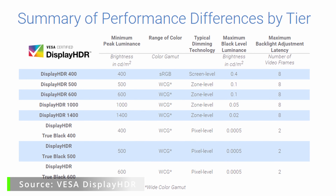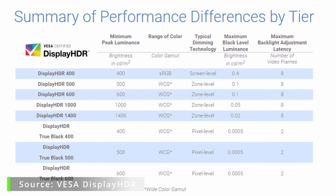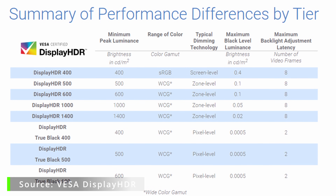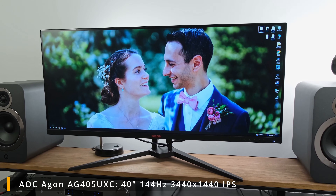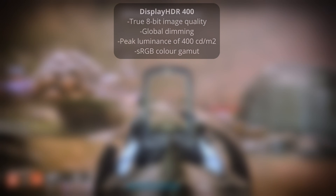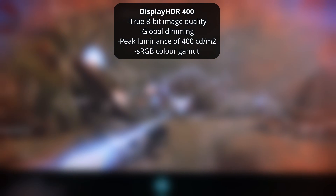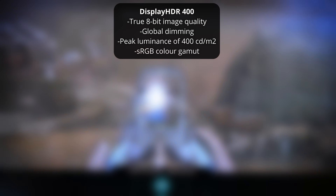The entry-level VESA Display HDR 400 is present on the AOC Agon AG405UXC. It gives you a significant step up over SDR, guaranteeing true 8-bit image quality, global dimming, a peak luminance of at least 400 nits, and coverage of the sRGB color gamut. That said, Display HDR 400 requires perfect implementation, and it does have the limitation of global dimming rather than local dimming.